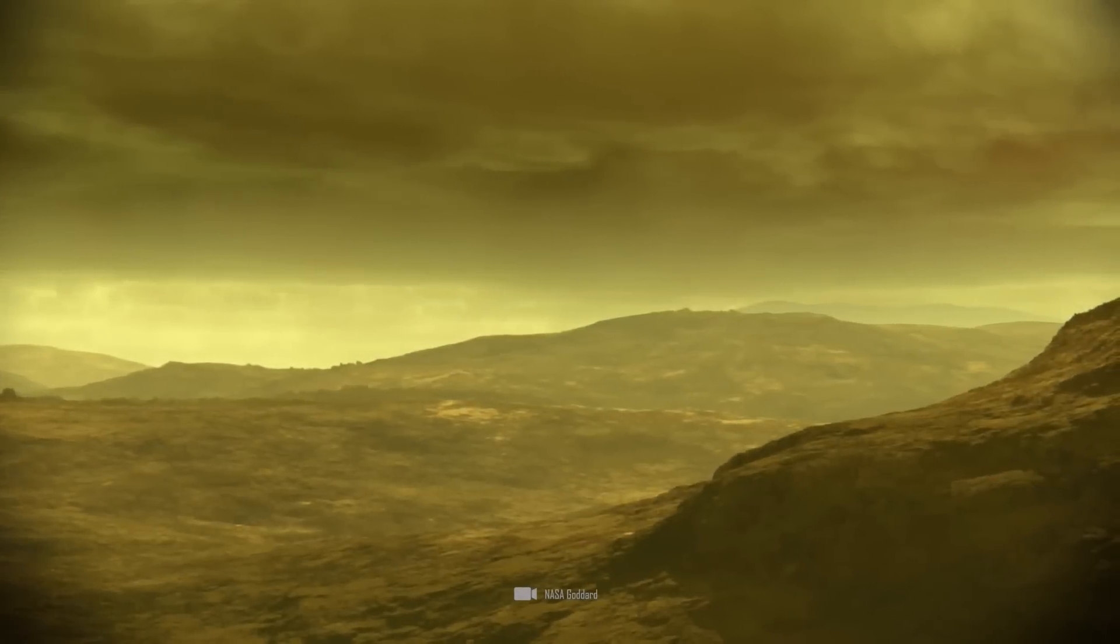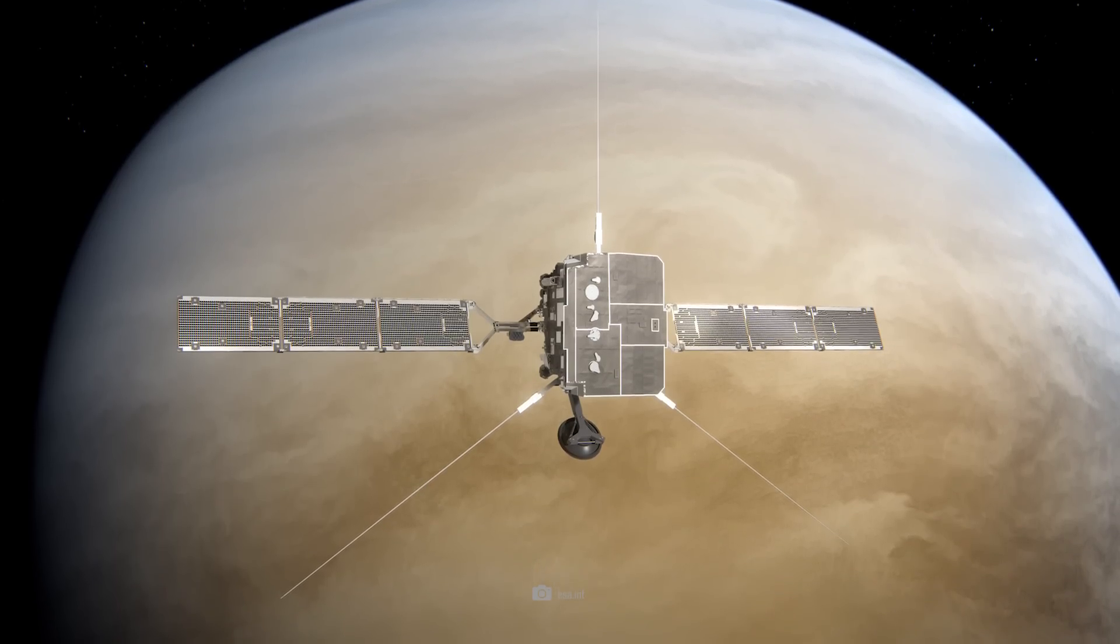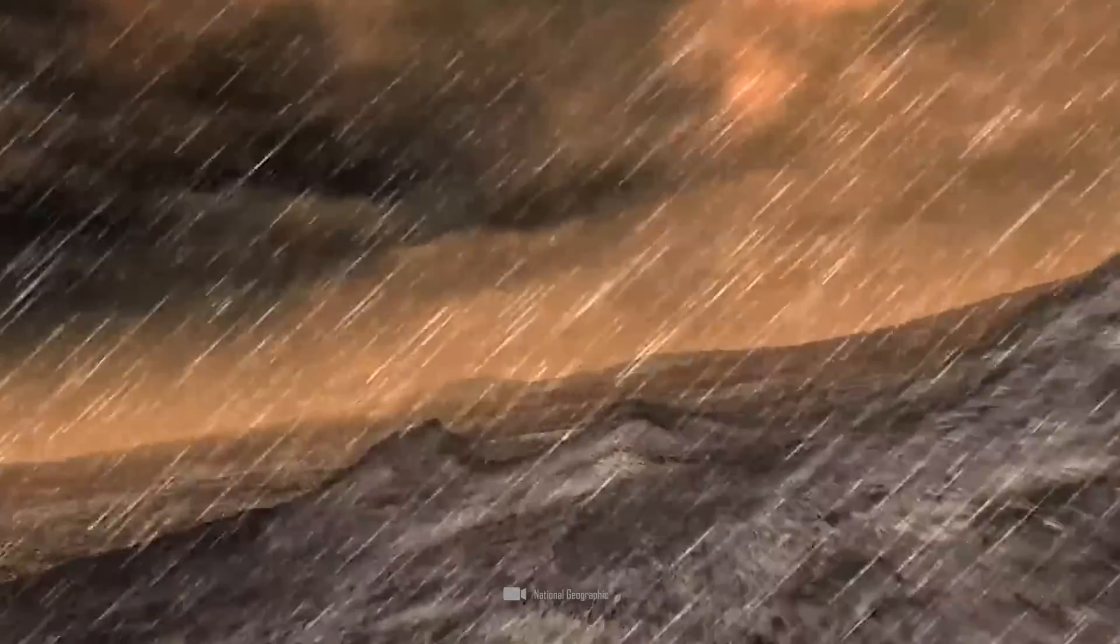Temperatures and pressures destroyed landers within minutes, and an orbiter seemed equally unattractive, since no one expected to discover anything important in the atmosphere or on the surface of Venus.